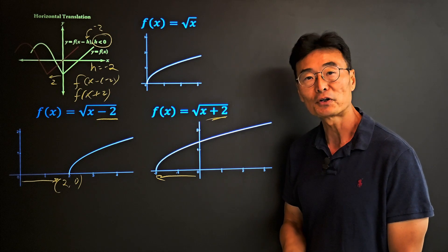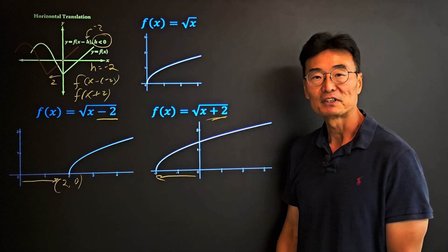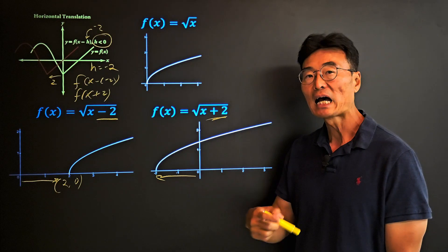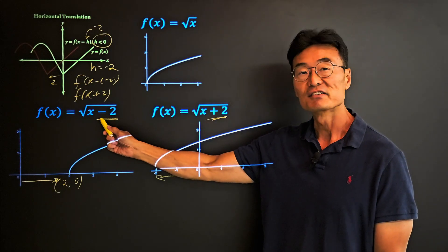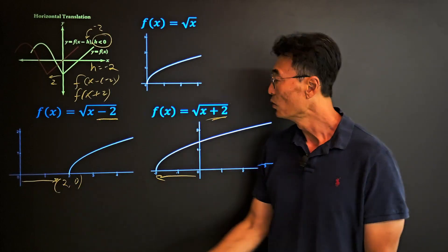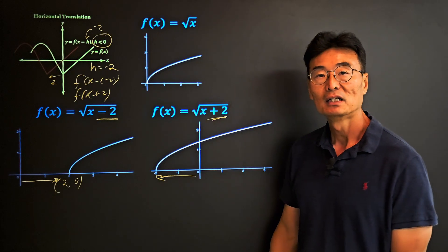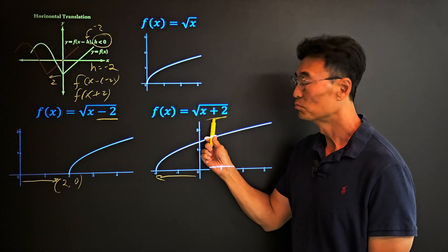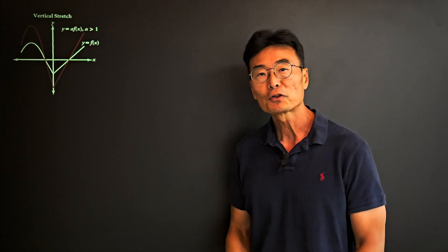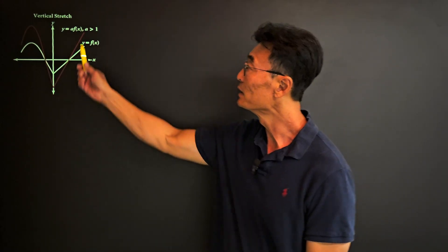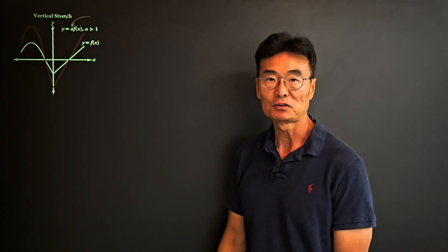Remember this: for vertical translations, if it's plus you go up, if it's minus you go down. However, for horizontal translations, when it's minus you go right, and when it's plus you go left.